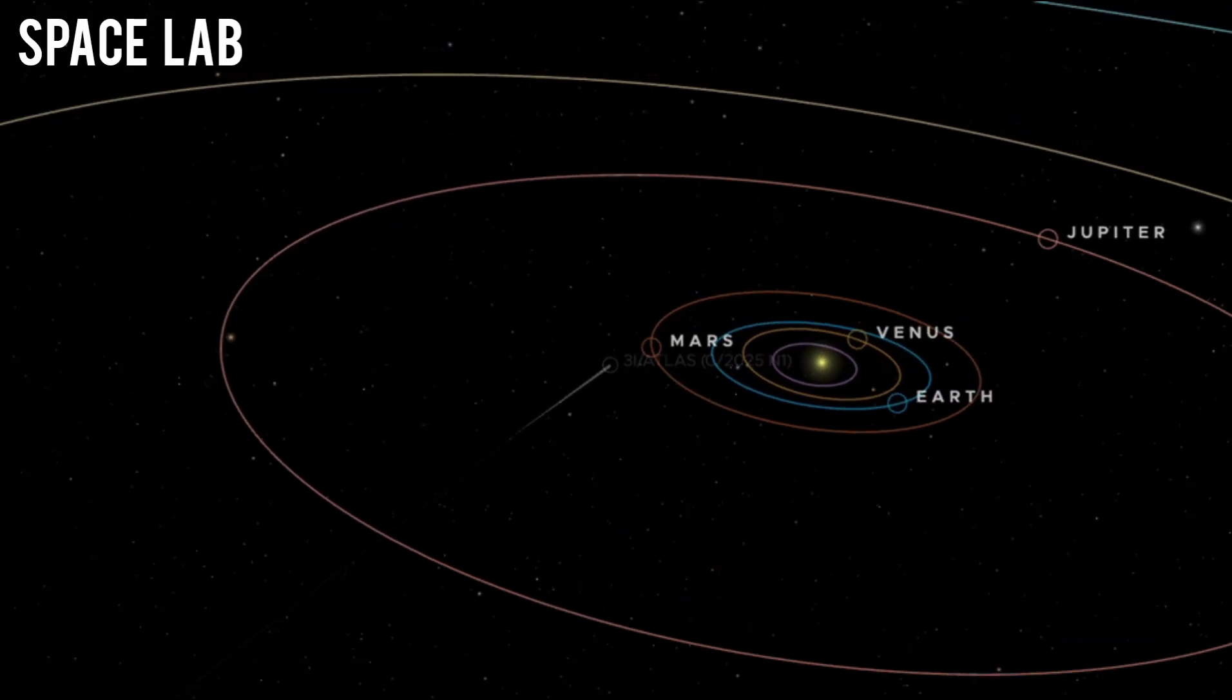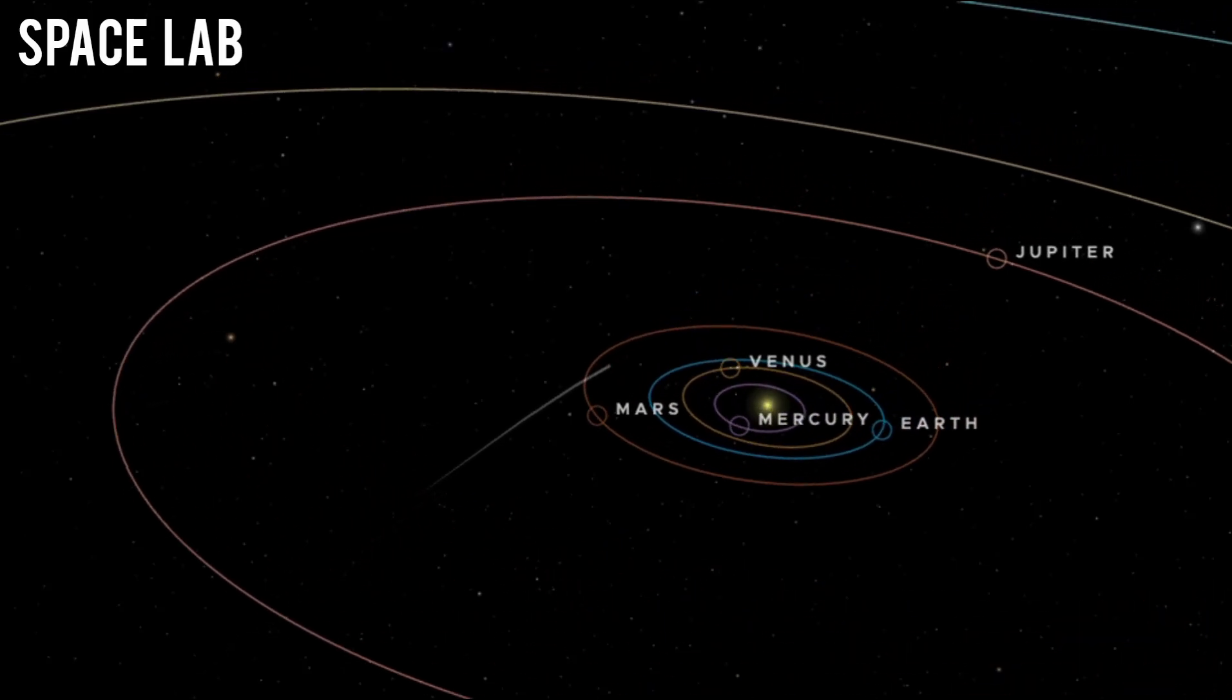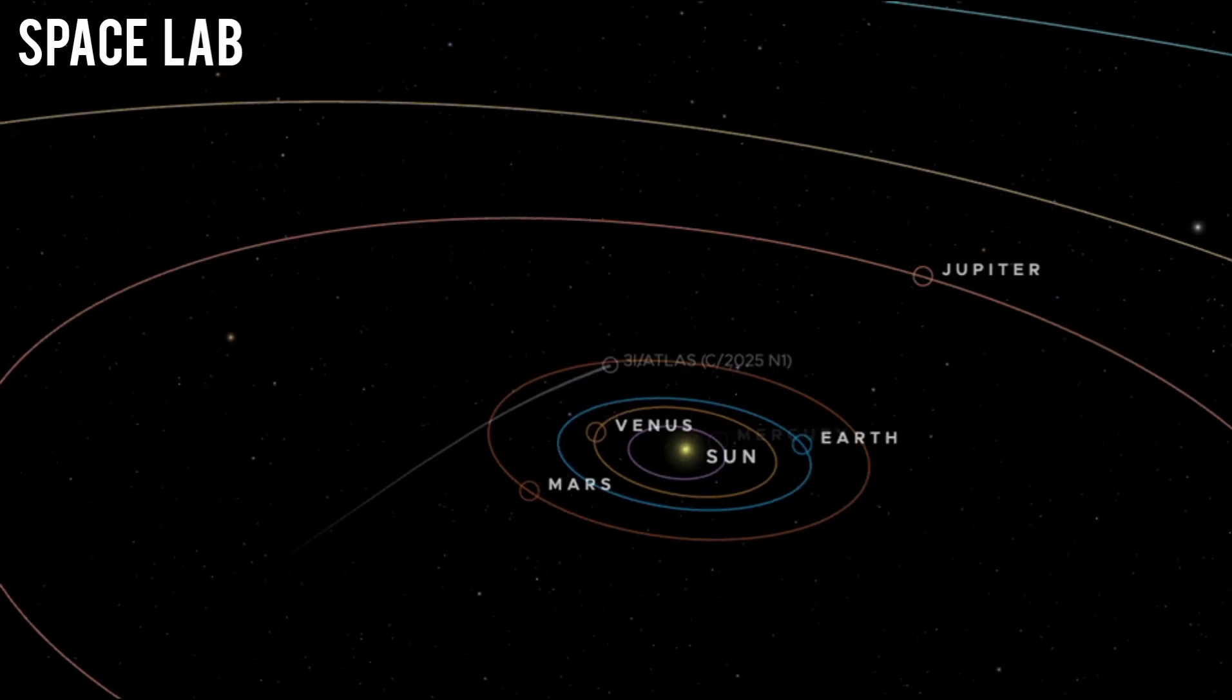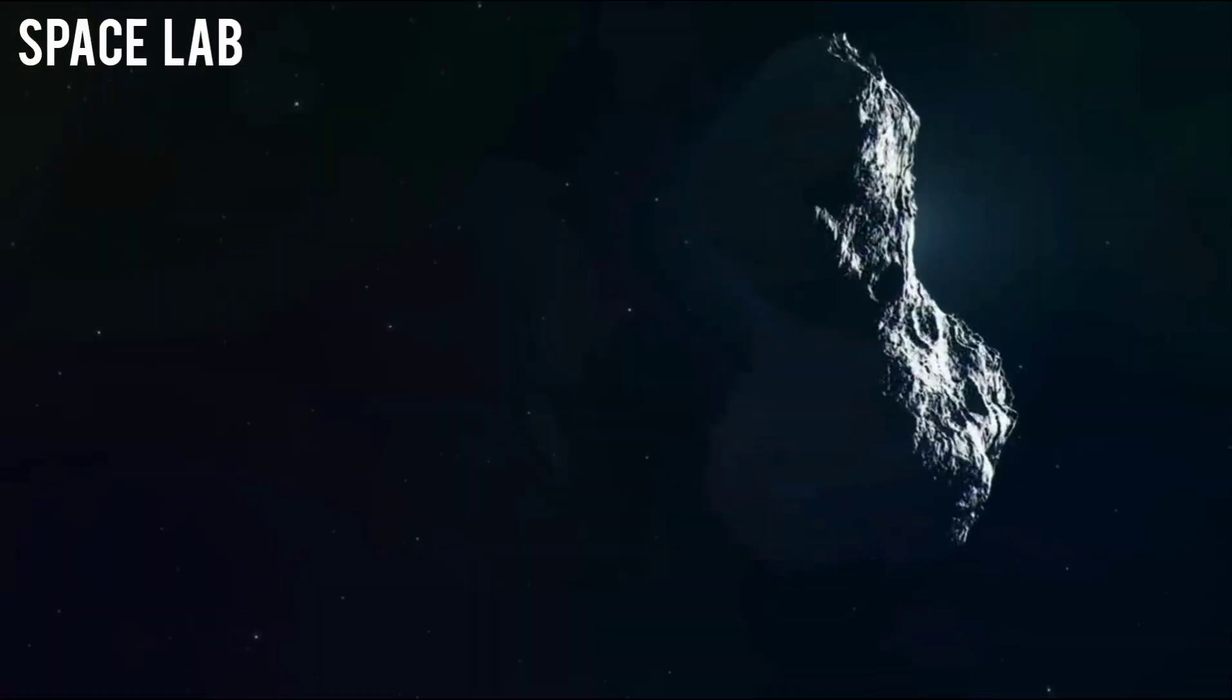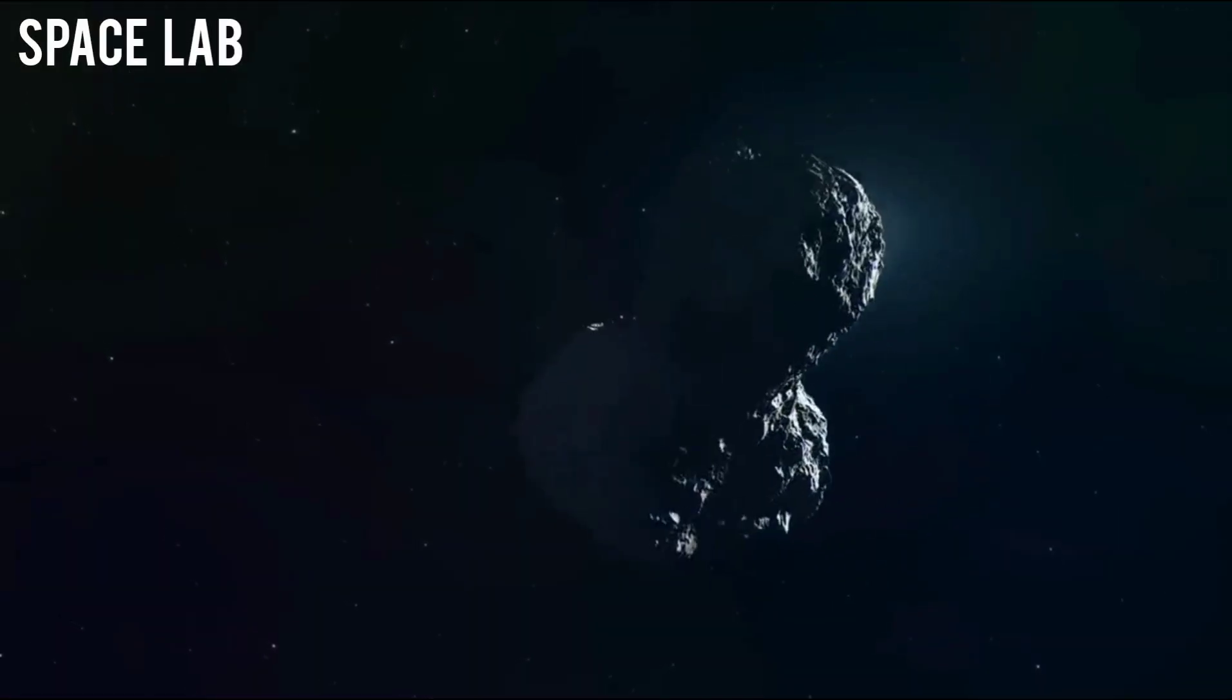It began as a routine observation, four of humanity's most powerful eyes in space, each focused on a familiar wanderer, comet 3118 Atlas.